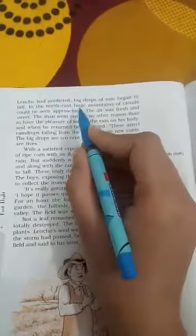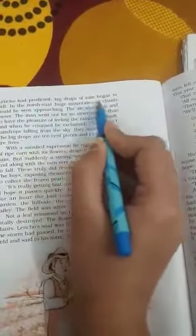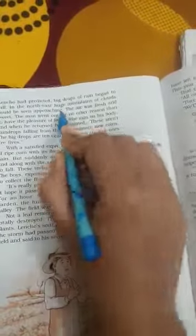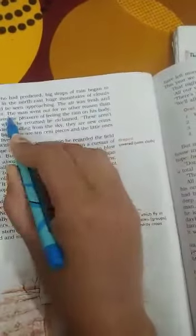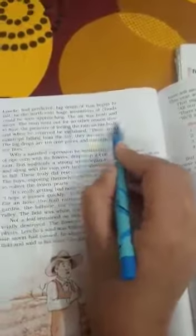When Lancho and his family were having dinner, suddenly he saw that it started raining. In the northeast, huge mountains of clouds could be seen approaching. The air was fresh and sweet. The man went out for no other reason than to have the pleasure of feeling the rain on his body. When he returned, he exclaimed,